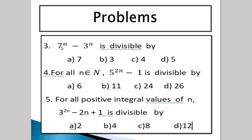Next, third problem: 7 to the power of n minus 3 to the power of n is divisible by — same procedure, put n equals 1: 7 to the power of 1 minus 3 to the power of 1 gives 7 minus 3, which is 4. So the answer is option C.